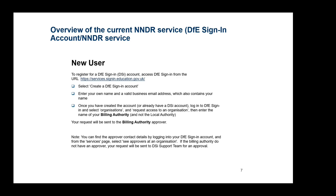To submit your completed claim, you'll first need to gain access to the NNDR service by setting up a DfE Sign-in account. DfE Sign-in is an authentication service that runs across many DfE services. Some of you will be familiar with it; others will need to set up an account from scratch. There are three broad steps: create your account, attach the account to your billing authority, and then attach your account to the NNDR service.